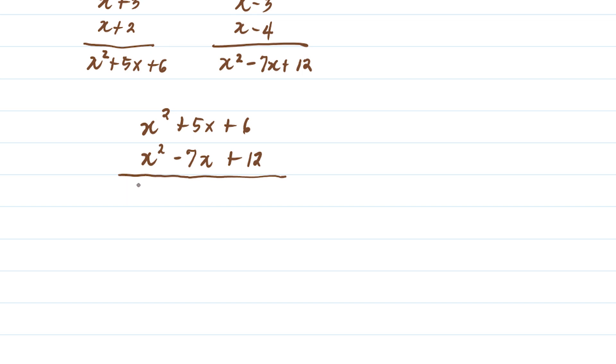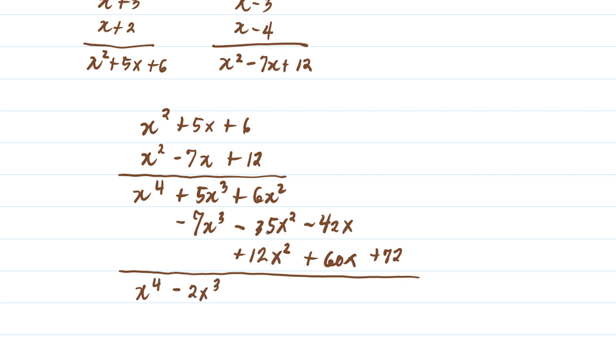We have x squared plus 5x plus 6 times x squared minus 7x plus 12. Multiplying: x raised to 4 plus 5x cubed plus 6x squared, then negative 7x cubed minus 35x squared minus 42x, then 12x squared plus 60x plus 72. Simplifying: x raised to 4 minus 2x cubed minus 17x squared plus 18x plus 72.